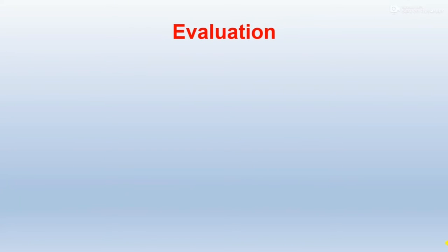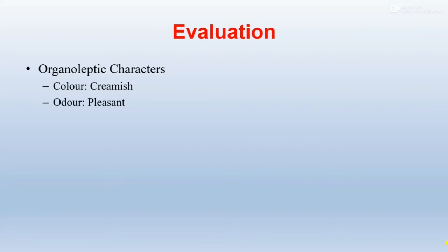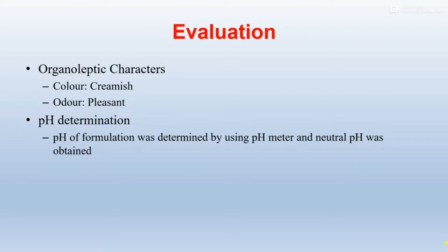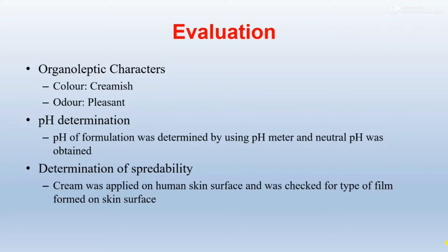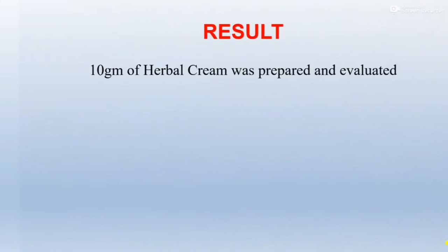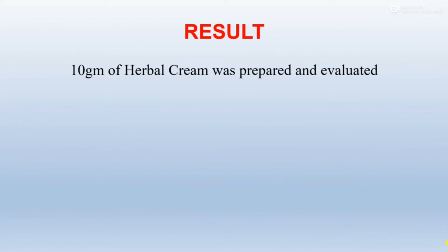Evaluation parameters: organoleptic characters were evaluated — creamish color was observed and pleasant odor was noted. pH determination was done using a pH meter and neutral pH was obtained. Spreadability determination: the cream was applied on human skin and checked for the type of film formed on the skin surface. Result: 10 grams of herbal cream was prepared and evaluated.